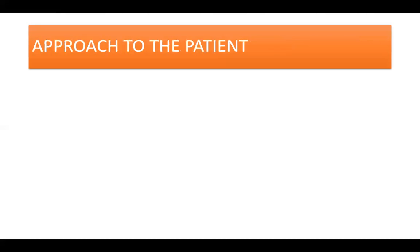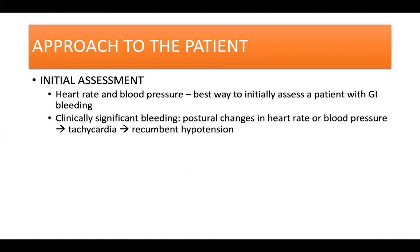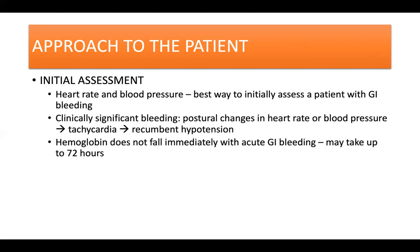The next part is to discuss the approach to the patient who presents with GI bleeding. For the initial assessment, measurement of the heart rate and blood pressure is the best way to initially assess a patient with GI bleeding. Clinically significant bleeding leads to postural changes in heart rate or blood pressure, then tachycardia, and finally recumbent hypotension. Take note that hemoglobin does not fall immediately; thus, hemoglobin may be normal or minimally decreased at initial presentation of a severe bleeding episode. As extravascular fluid enters the vascular space to restore the volume, the hemoglobin falls, but this process may take up to 72 hours.